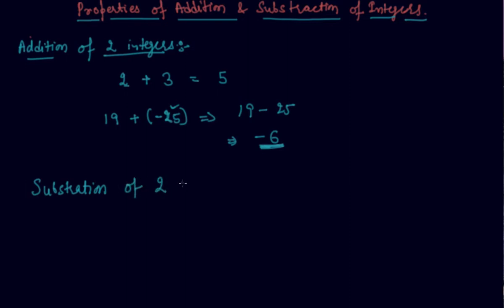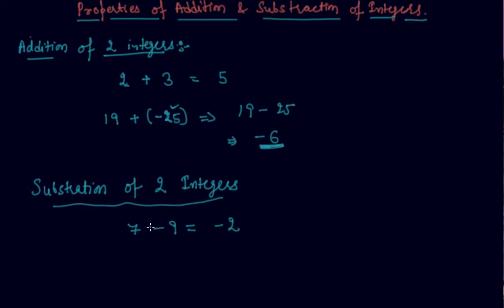Now let's come to subtraction of two integers. If I write 7 minus 9, you will always get an integer whether you subtract or add two integers. The result here will be minus 2, because 9 minus 7 is 2 but the sign of the larger integer is negative. Now if I write minus 27 minus minus 30, let's work that out.